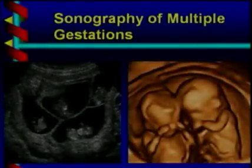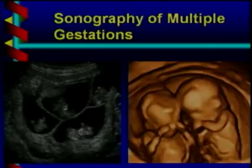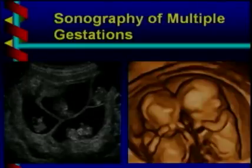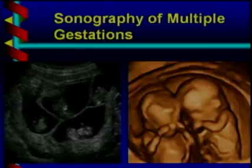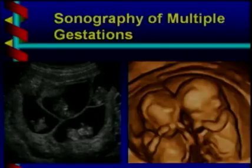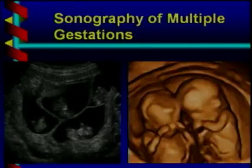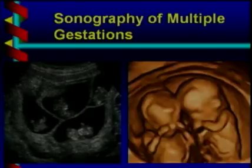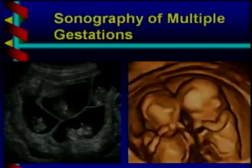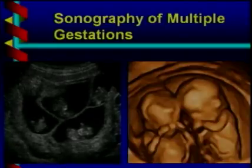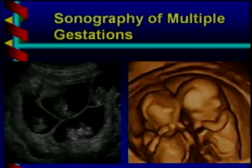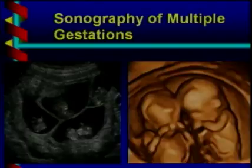I'll spend the next 45 minutes talking about the ultrasound of multiple gestations. I find it a very interesting topic because when they're twins or even higher order multiples, doing ultrasound involves doing everything you do for a singleton gestation, but multiple times. What makes it even more interesting is that there are additional things to look for — abnormalities that occur only in twins or higher order multiples — and those are some of the things I'll be focusing on here.